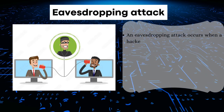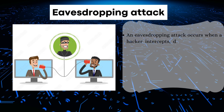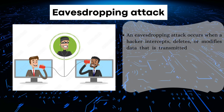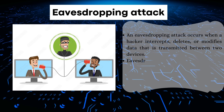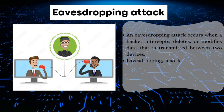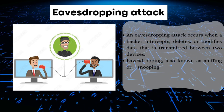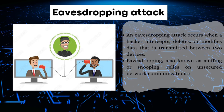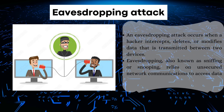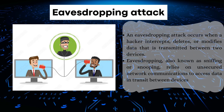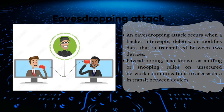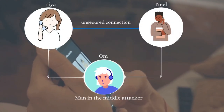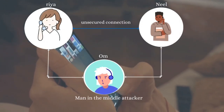What is an eavesdropping attack? An eavesdropping attack occurs when hackers intercept, delete, or modify data that is transmitted between two devices. Eavesdropping is also known as sniffing or snooping, and relies on unsecure network communication to access data transmitted between devices.